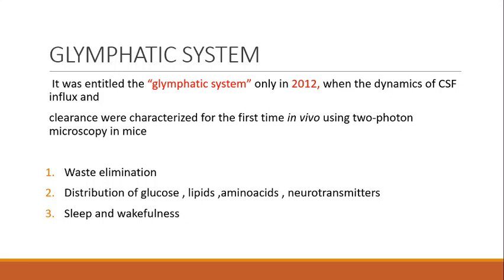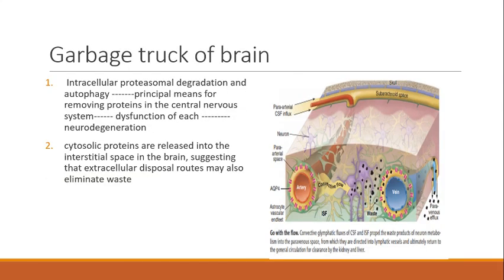The important functions of the glymphatic system include waste elimination and the distribution of glucose, lipids, amino acids, and neurotransmitters. It is mainly active during sleep and gets switched off during wakefulness — hence it is considered the garbage truck of the brain. Proteins can be degraded intracellularly by autophagy, or cytosolic proteins can be released into the interstitial space extracellularly, suggesting that extracellular disposal routes through the glymphatic system also eliminate waste.